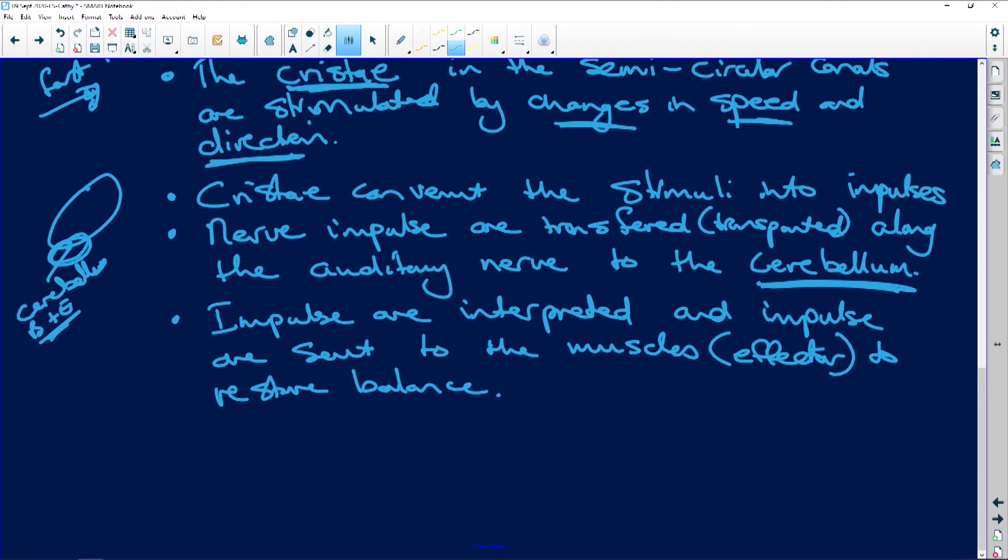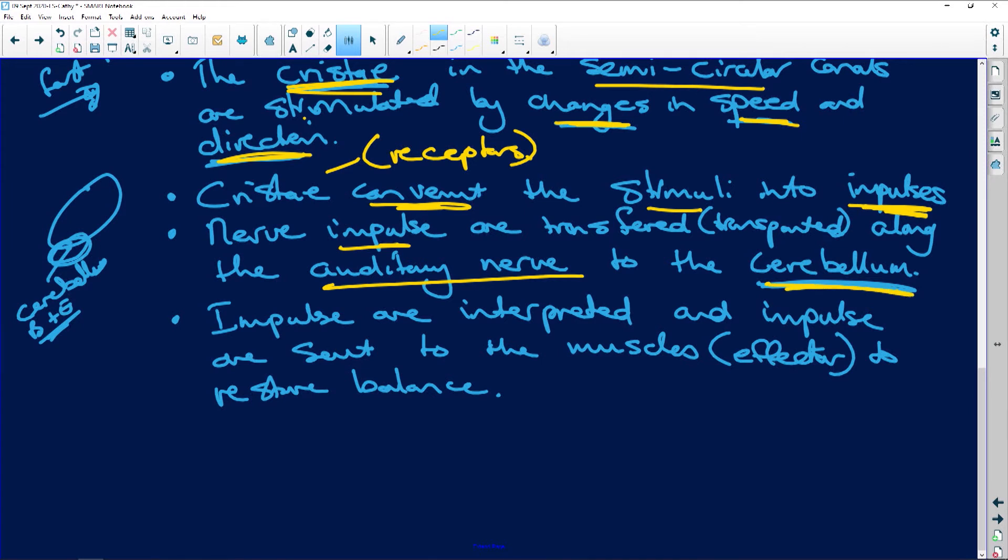Okay people, you have to know this. It's the cristae that are in the semi-circular canals. When they are stimulated by the changes in speed and direction, that's what makes them change. So now what do they do? They convert the stimuli into impulses. They are receptors and they convert stimuli into impulses. The impulses travel along the auditory nerve to the cerebellum. Impulses are interpreted and impulses are sent to the muscles, which are the effectors, to restore balance. Done, done, dusted.